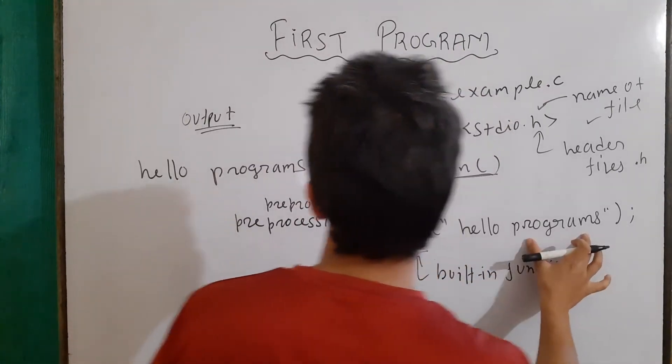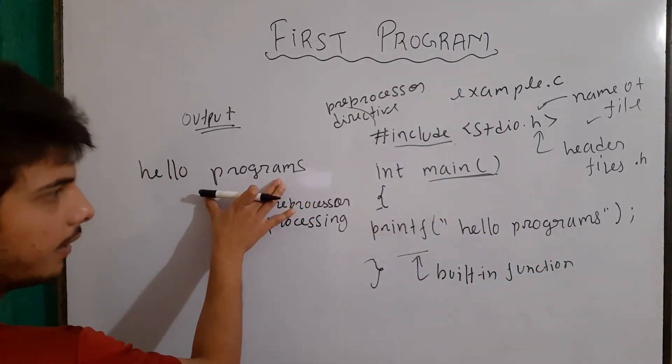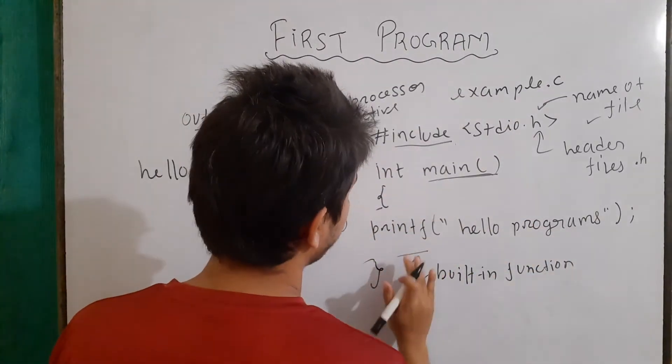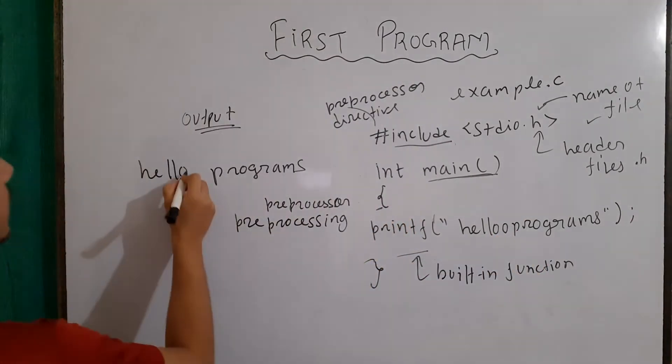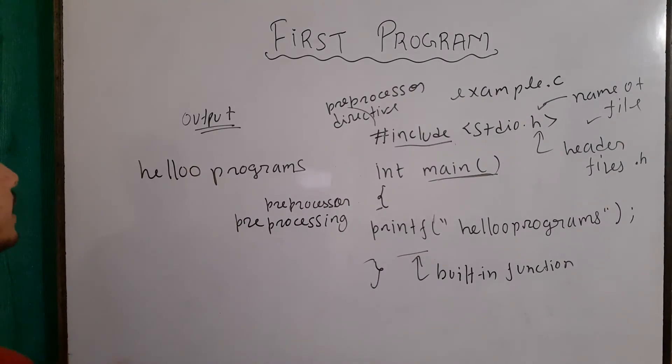So, whatever I am writing here will be shown in our output screen. For example, if I write here, hello and with additional O, then after compiling and run, it will give me output as hello, extra O and then programs.